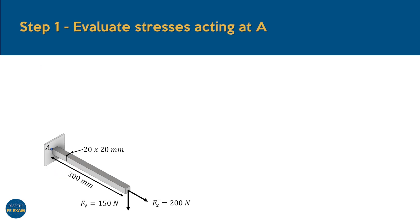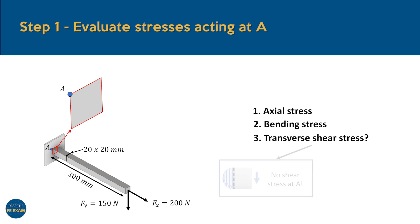Let's start by taking a closer look at our system. Focusing specifically on point A, we can isolate this location by examining an imaginary cross-section of the beam right at that point. Given the axial force Fx and the perpendicular force Fy applied to the beam, we can identify that the beam will experience both axial stress and bending stress. But what about shear stress? To answer this, let's refer to the transverse shear stress distribution. As shown, the stress is always zero at the outer edge of a cross-section, and this is exactly where point A is located. This means that point A will not experience any contribution from shear stress, leaving us with only the axial and bending stresses to consider in our analysis.